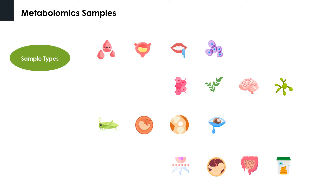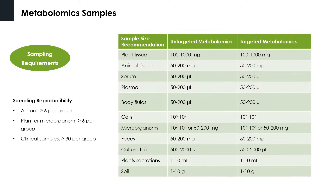In addition, plant, fungal and microbial extracts, cerebrospinal fluid, lymphatic fluid, insect hemolymph, amniotic fluid, follicular fluid, knee synovial fluid, tears, semen, placenta, fecal and intestinal contents extracts can also be detected. Metabolomics requires a relatively high level of sample reproducibility, and the reproducibility of each set of samples should be greater than 6. These requirements are varied for different sample types, and the recommended sample sizes for the most common sample types are listed in this table.